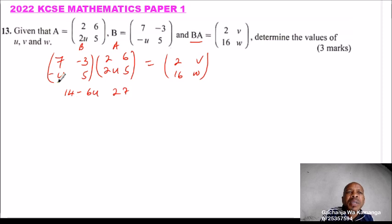Then we have U, U minus U times 2, that is minus 2U. 5 times 2U, that is 10U, so there will be left with 8U. Then we have minus 6U plus 25, minus 6U plus 25.